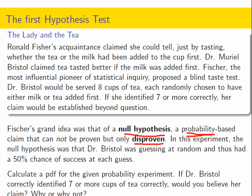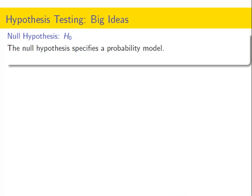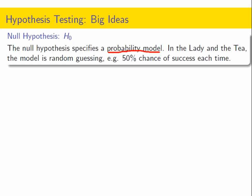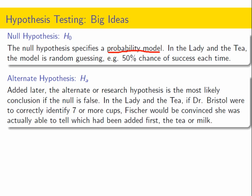What we're going to do is create a probability density function for this probability experiment, then calculate these probabilities to decide whether or not we would believe her claim. A couple of big ideas to remember: the null hypothesis is always going to specify a probability model — every null hypothesis we have does this. For the lady tasting tea, the null hypothesis is random guessing. This idea of specifying a probability model was added later; it was not part of Fisher's original idea, but it has become standard in the roughly 100 years since.